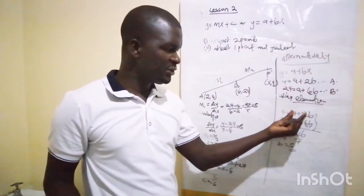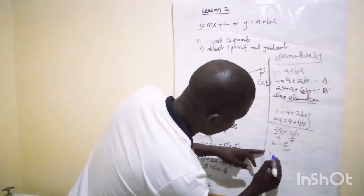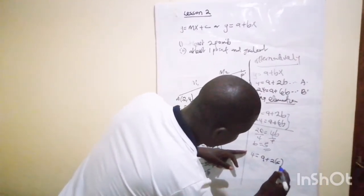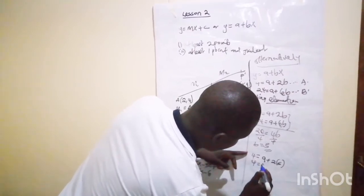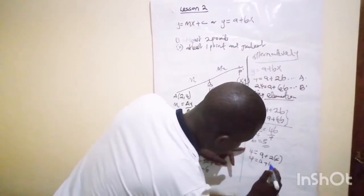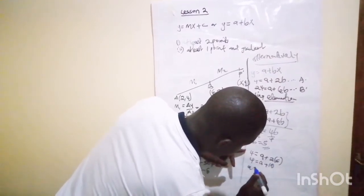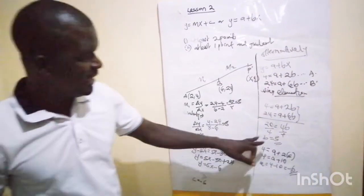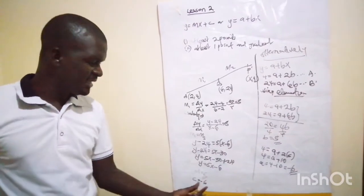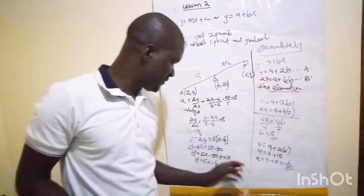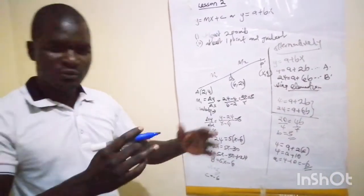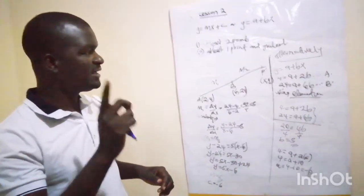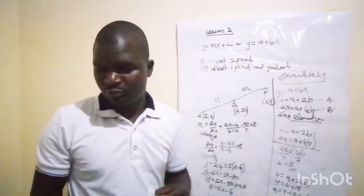With b = 5, substitute back into the first equation: 4 = a + 2(5), so 4 = a + 10, giving a = -6. Our a is negative 6, the same as c, the y-intercept, and b is 5, the same as m. This confirms both methods give the same result.